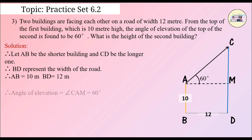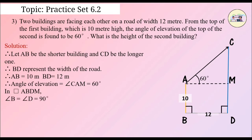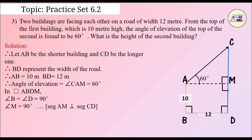We need to find the length of CD. Since the angle of elevation is measured from the horizontal line, let's consider segment AM perpendicular to segment CD. Therefore, the angle of elevation is equal to angle CAM, which is equal to 60 degrees. In quadrilateral ABDM, angle B is equal to angle D is equal to 90 degrees, since the foot of the buildings are perpendicular to the ground. So angle M is equal to 90 degrees, since segment AM is perpendicular to segment CD. Therefore, angle A is equal to 90 degrees.